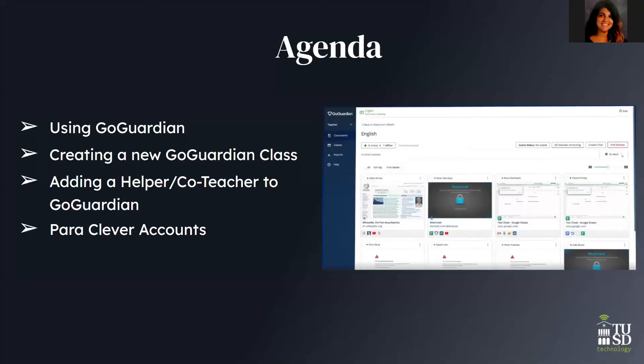Our agenda for today: we're going to go over using GoGuardian, creating a new GoGuardian class, and then adding a helper and co-teacher to your Clever-synced GoGuardian class. We'll also cover a custom-created GoGuardian class, and then para Clever accounts, which is extremely important for them to get access to GoGuardian.